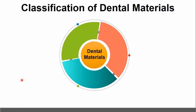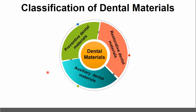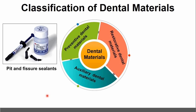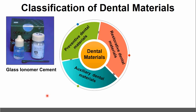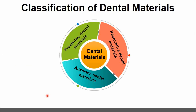The first type is preventive dental materials. The second type is restorative dental materials, and the third type is auxiliary dental materials. Preventive dental materials include pit and fissure sealants and glass ionomer cements as a few examples.